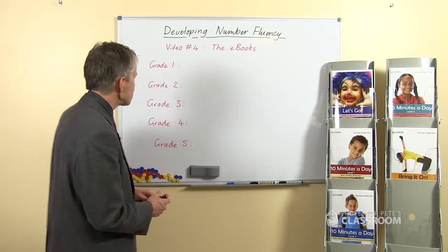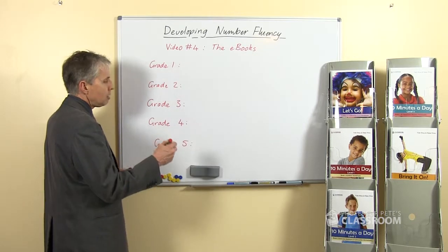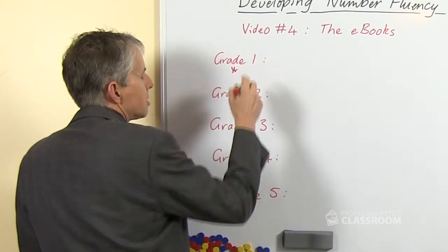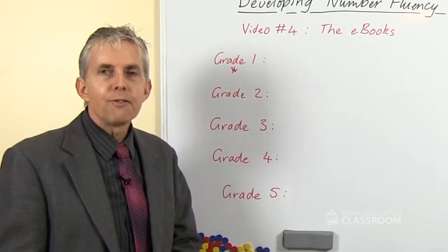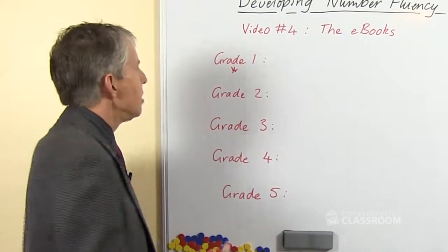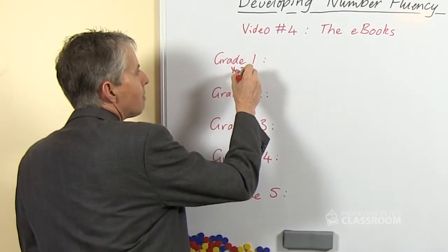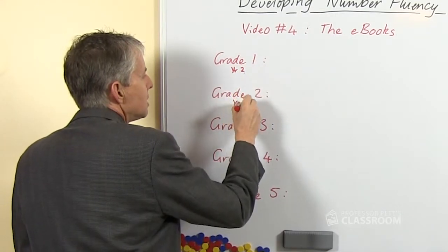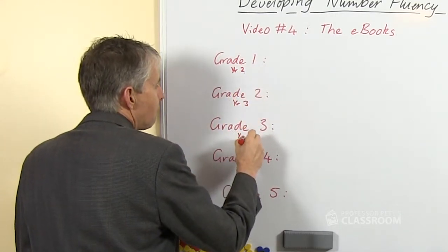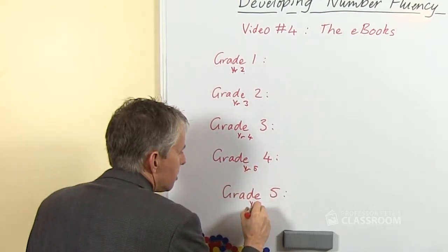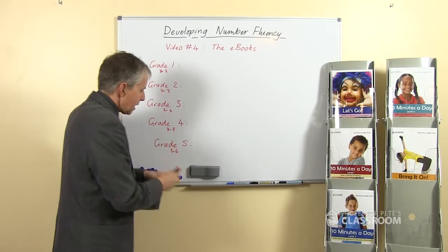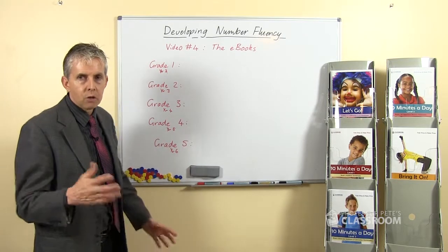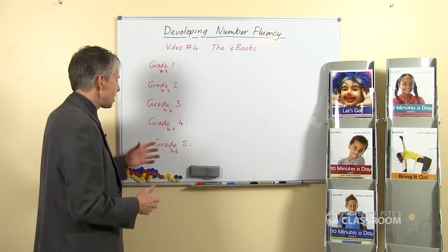I put grade levels here — if you're in the United States then that will make sense to you. For Australia and the UK we use year levels, so the number is one higher than the grade. So this is year two, year three, year four, year five, year six. If you go to our website and have a look at the resources, they're clearly labeled according to that.